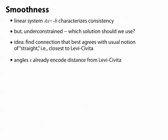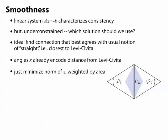Fortunately our angles x already encode the deviation from Levi-Civita, so our energy is just going to be the norm of this vector of angles. Of course we want to be careful here to use the right area weighting, so we're going to associate each dual edge with the blue diamond area pictured here,